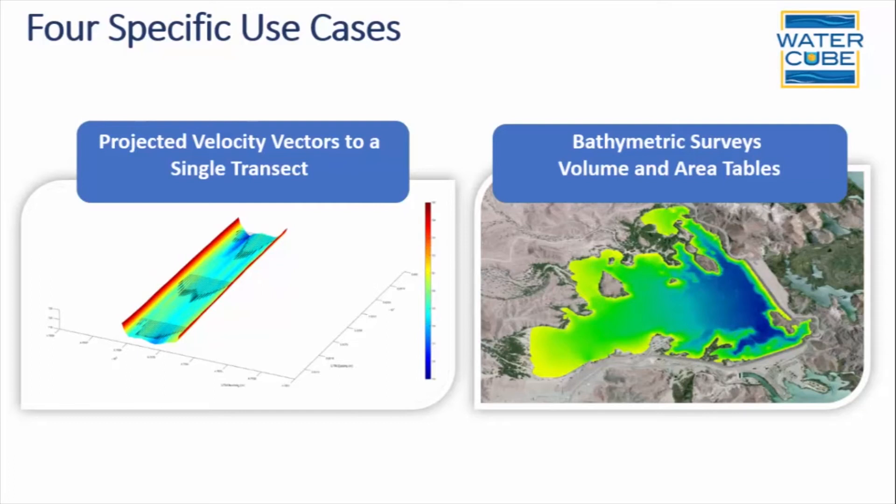Or you may want to project velocity vectors to a single transect, to import directly into a habitat model, perhaps. And bathymetric surveys, so that we can provide volume and area tables for reservoirs, lakes, and other bodies of water.